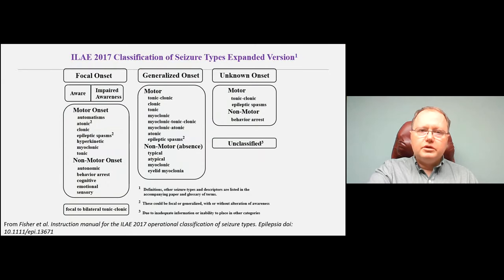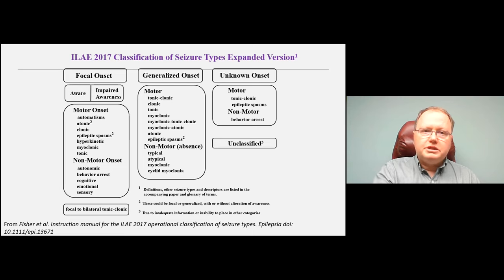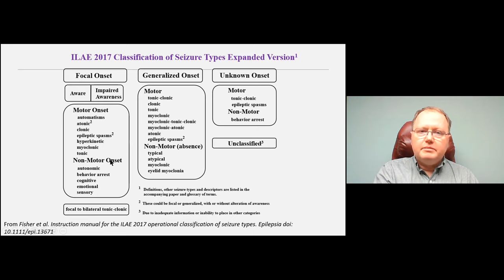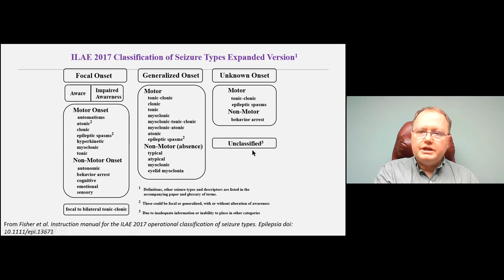The 2017 update expanded seizure type classification significantly — more technical for research purposes than for the practical clinician. Focal onset seizures are now classified as aware or impaired awareness, then further broken down into motor onset or non-motor onset. Generalized seizures are categorized as motor or non-motor, such as absence seizures where the patient simply stares. Unknown and unclassified seizures round out the framework.